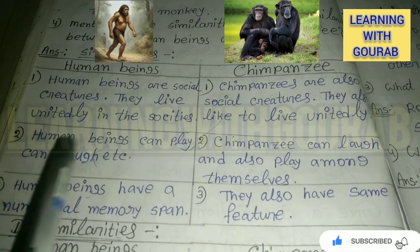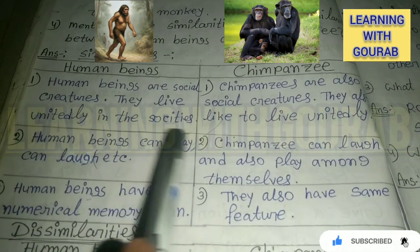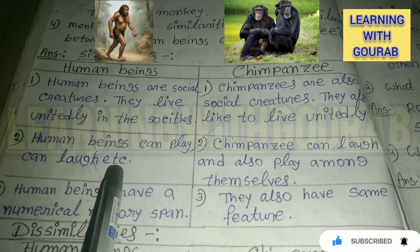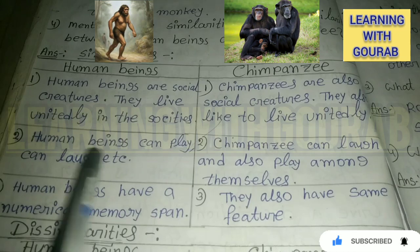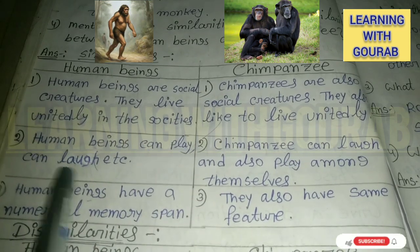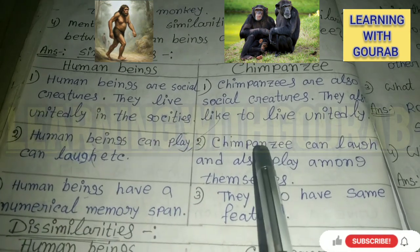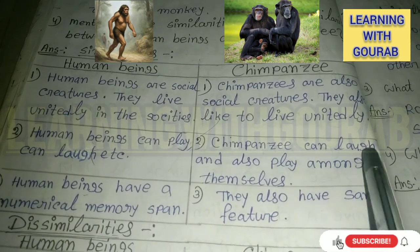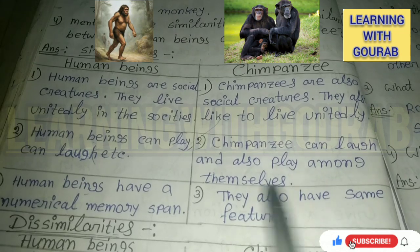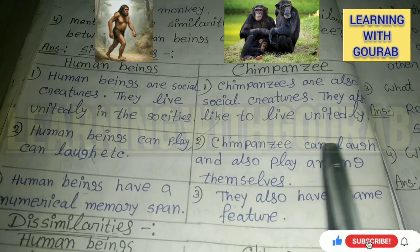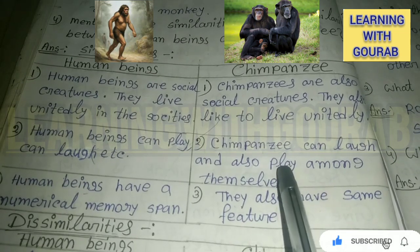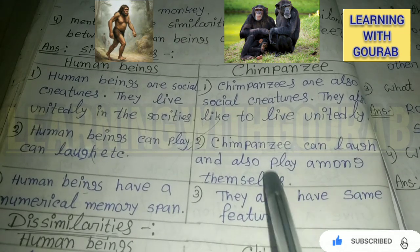Similarity two: human beings can play, laugh, etc. Chimpanzees can also laugh and play among themselves.